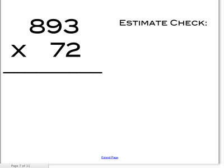And then 893 times 72. 2 times 3 equals 6. 2 times 9 equals 18, so you put the 8 here and carry the 1. And 2 times 8 equals 16, plus 1 equals 17. So you get 1,786.